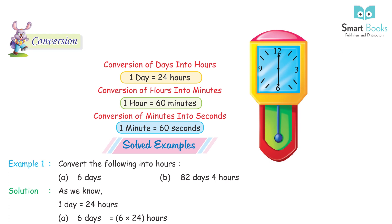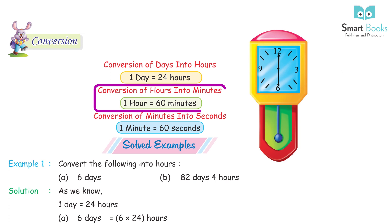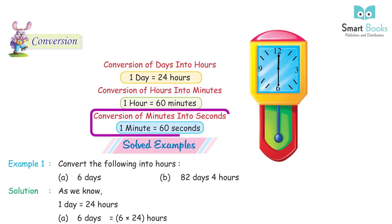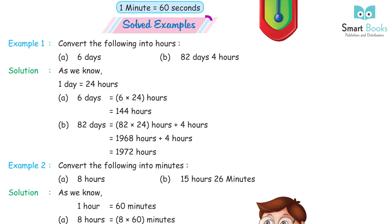Conversion: Conversion of days into hours — 1 day = 24 hours. Conversion of hours into minutes — 1 hour = 60 minutes. Conversion of minutes into seconds — 1 minute = 60 seconds.